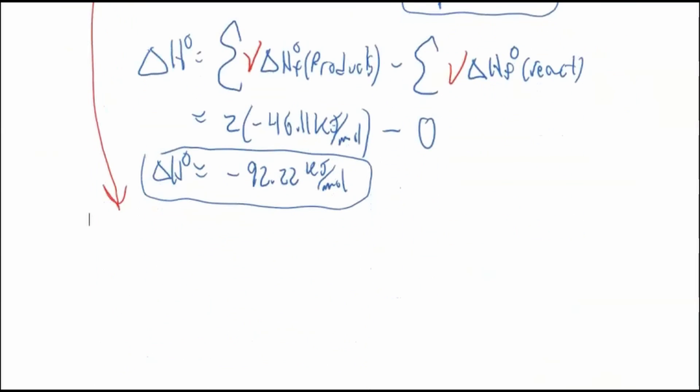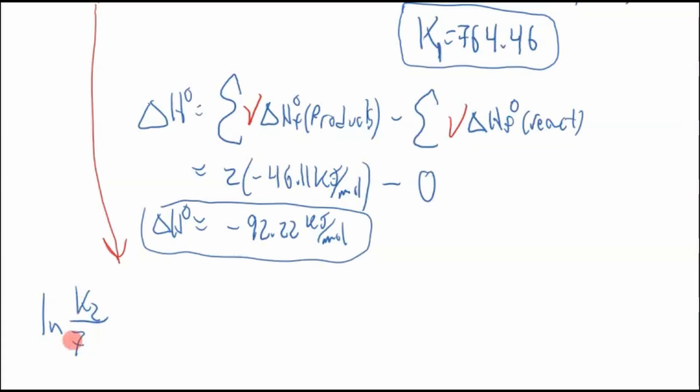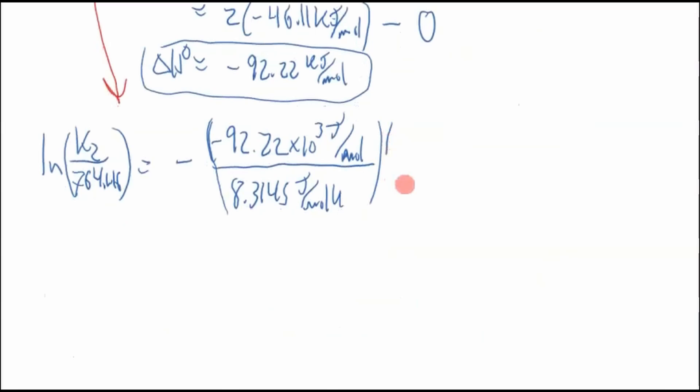So we'll bring this down here. And ln K2 over K1, which is 764.46, equals negative. Now, this is a negative, so this is negative 92.22. And because we're dividing it by R, R is 8.3145 joules per mole Kelvin. This has to be in joules. So times 10³ joules per mole. Extend my brackets there. One over, one over, there we go. That was a hard line to draw.